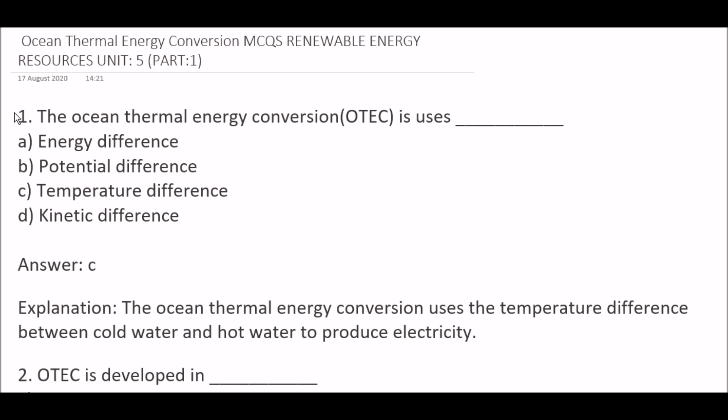First question: The ocean thermal energy conversion (OTEC) — it uses: Option A, energy difference; Option B, potential difference; Option C, temperature difference; Option D, kinetic difference. The right answer is Option C, temperature difference. Because the ocean thermal energy conversion uses the temperature differences between cold water and hot water to produce electricity.